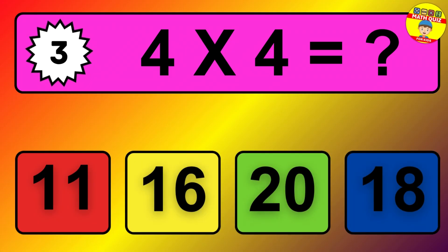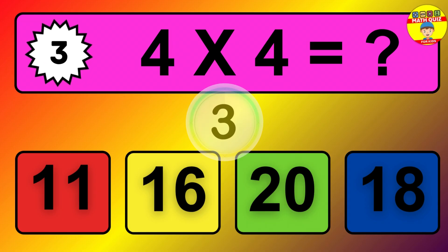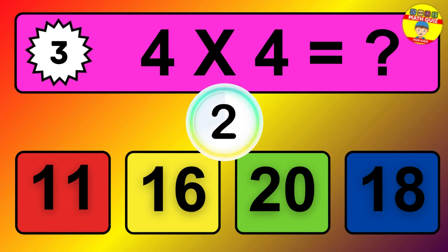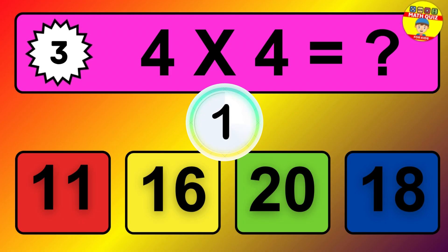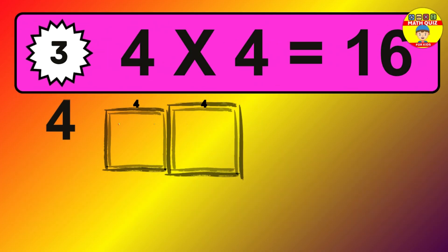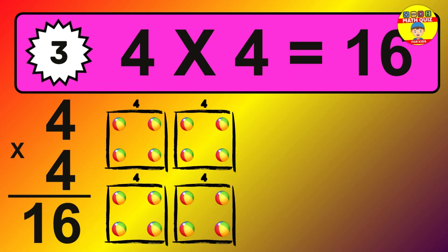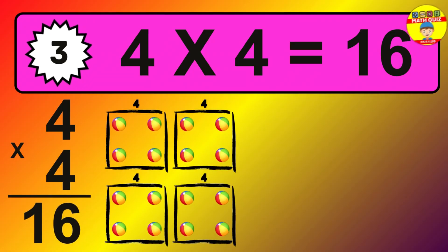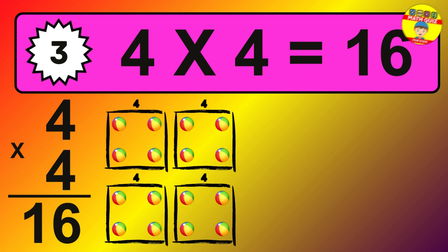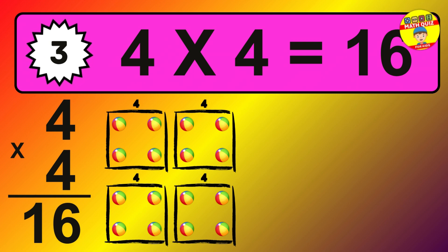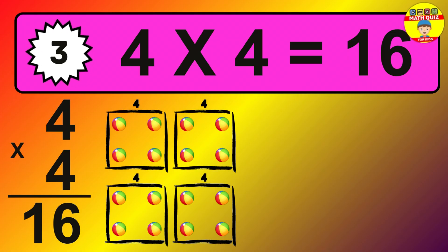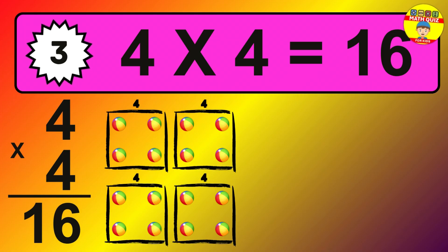Question 3. 4 times 4 equals what? The answer is 4 times 4 is 16. To calculate, we have 4 groups with 4 balls each one. So, how many balls do we have? 16 balls.